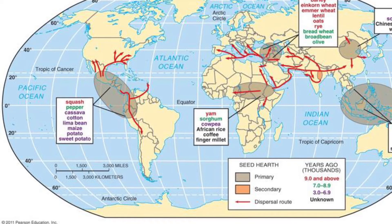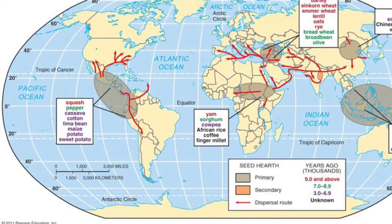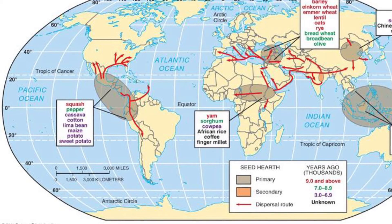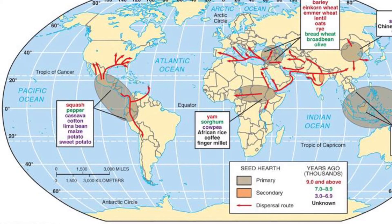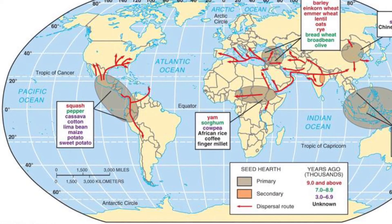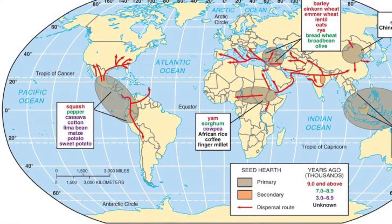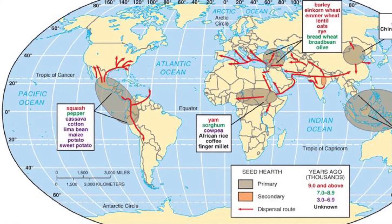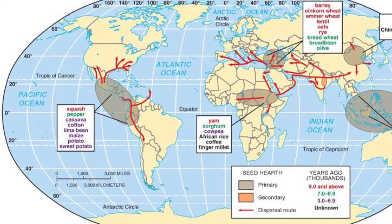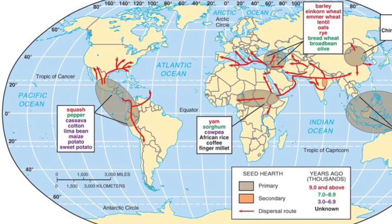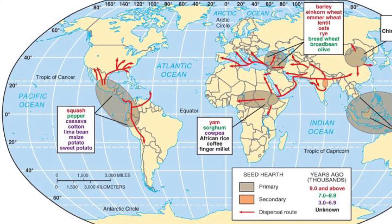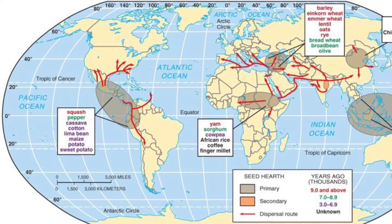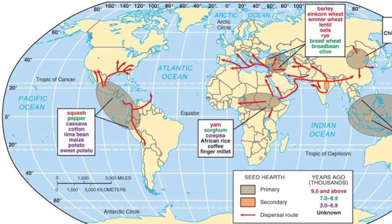Sauer identified three hearths for seed agriculture in the eastern hemisphere: western India, northern China, and Ethiopia. From western India, seed agriculture diffused to Southwest Asia, where wheat, barley, and grains were domesticated, eventually feeding Europe and the Americas. This area also domesticated herd animals — cattle, sheep, and goats. From northern China, millet was diffused; rice probably developed in Southeast Asia. In Ethiopia, millet and sorghum developed. In the western hemisphere, Sauer identified southern Mexico — where squash and maize (corn) developed — and northern Peru, where beans, cotton, and squash were grown.